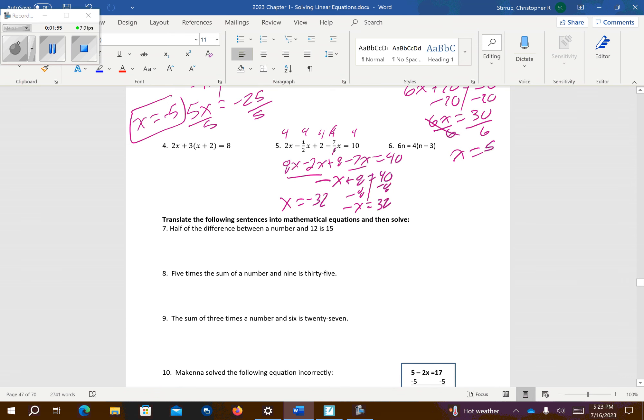Problem number 7 says half the difference between a number and 12 is 15. So difference means subtract, is means equal. So half the difference between a number and 12 is 15. So we can go ahead and multiply everything by 2 to get rid of that denominator. So that's going to give me x minus 24 equals 30. Add 24 to both sides. So it looks like I'm going to get 54.